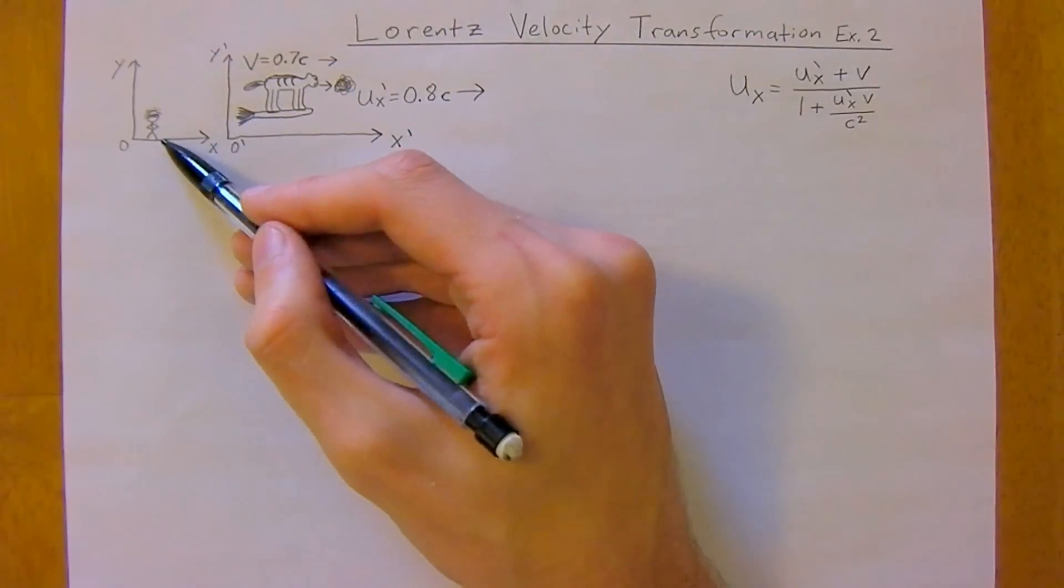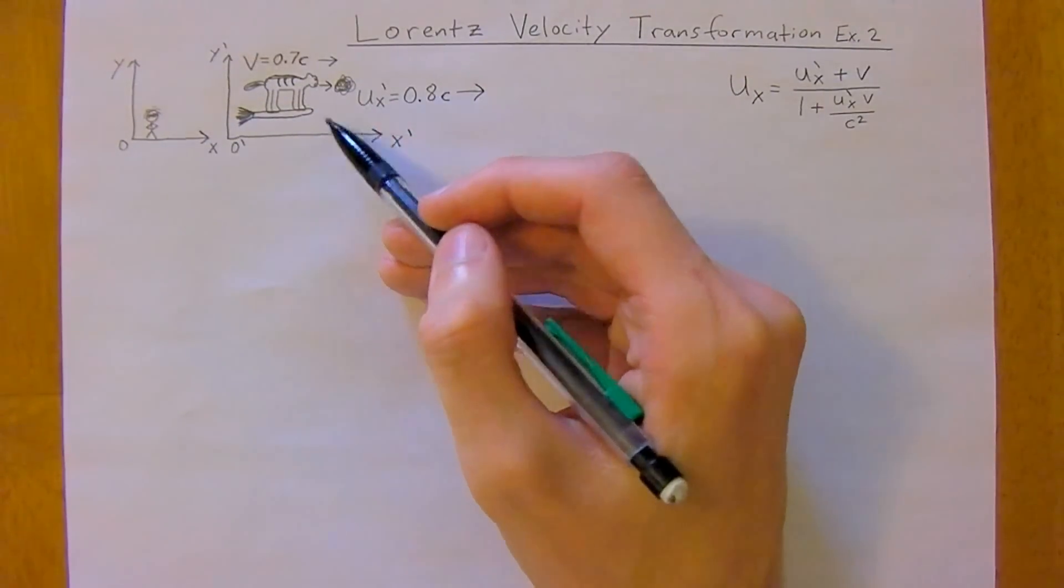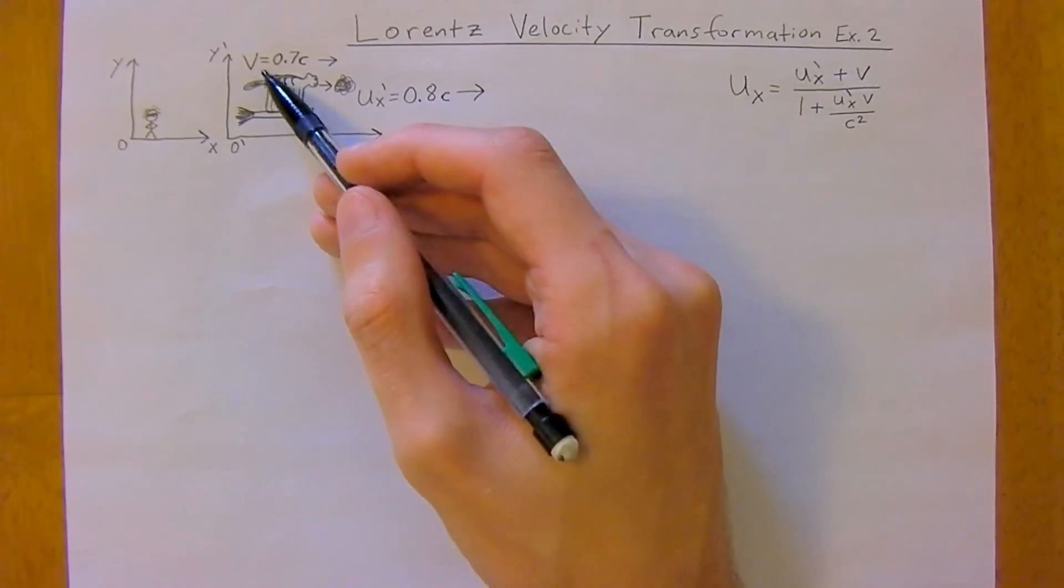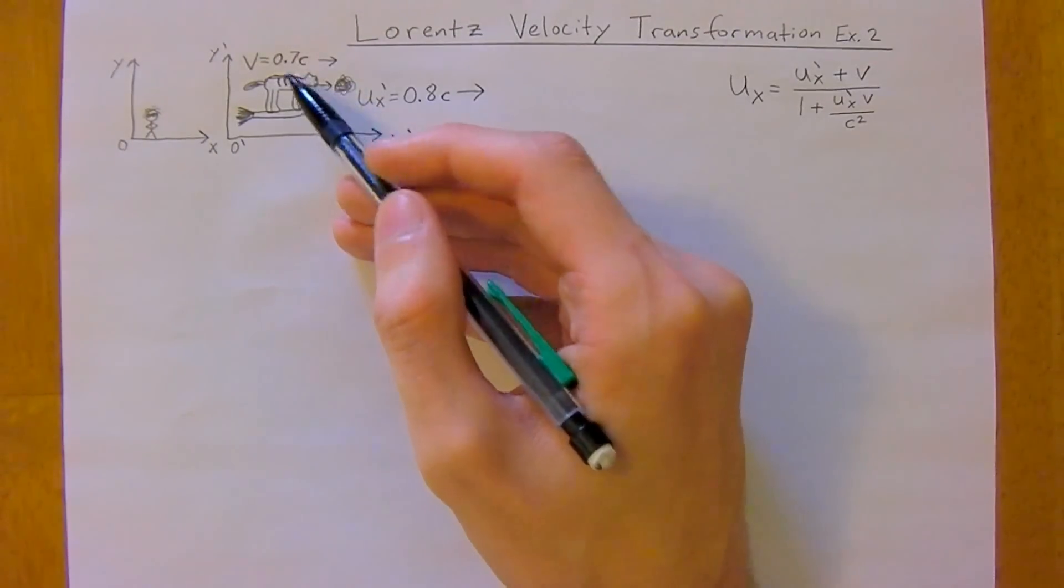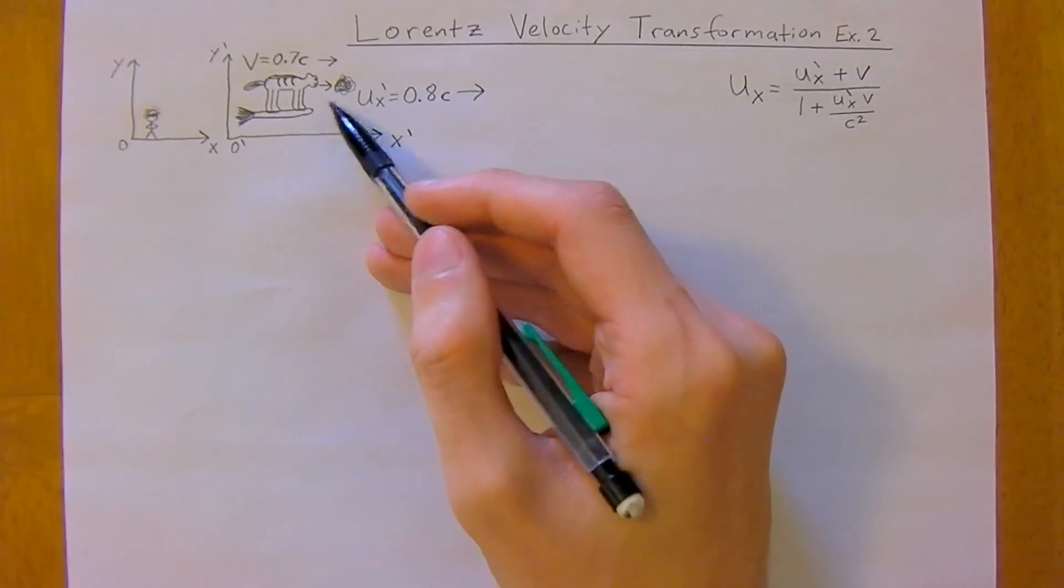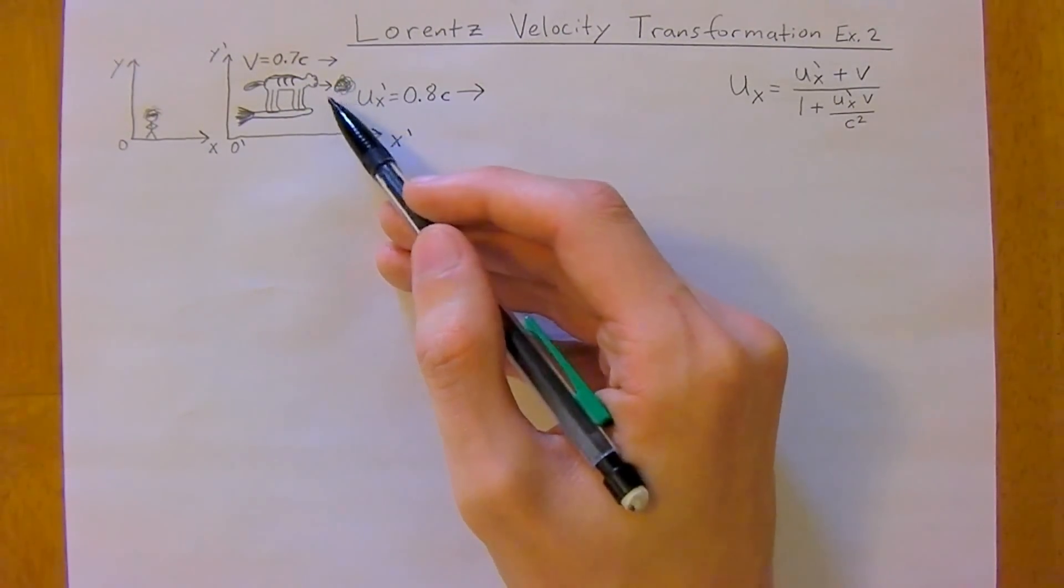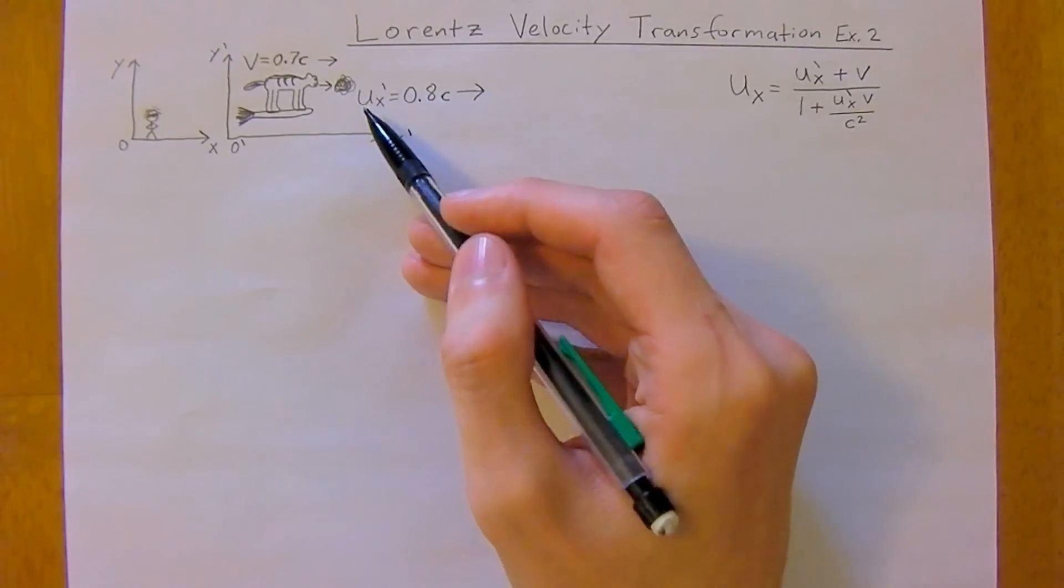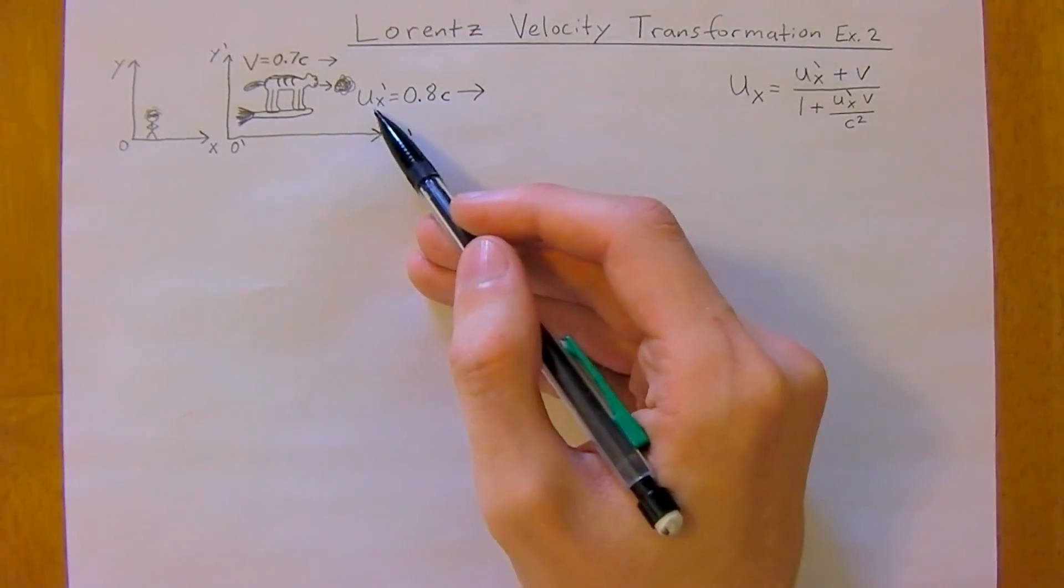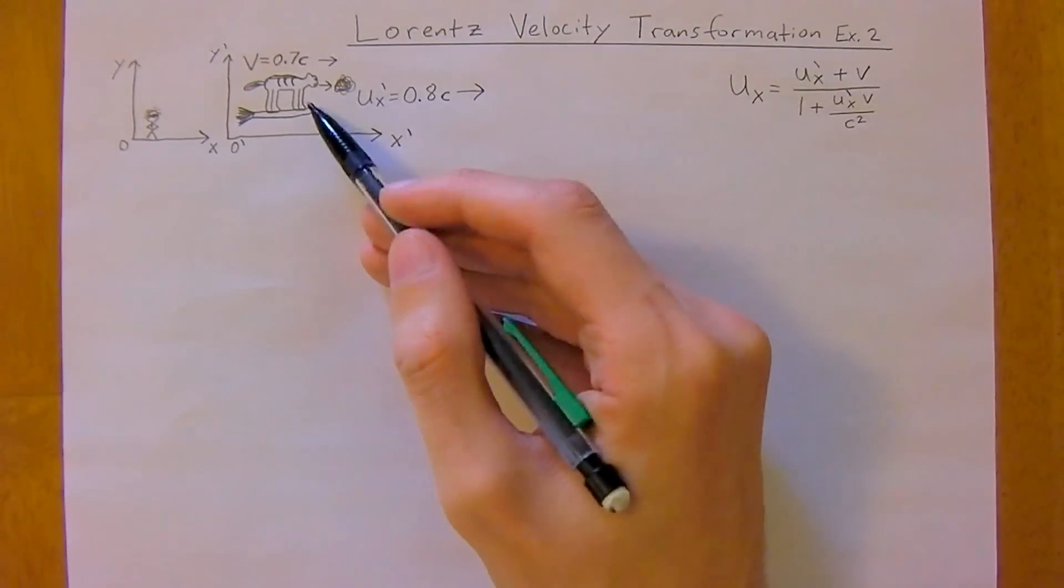So relative to you, stationary on Earth, you observe that this cat flying on a broomstick is traveling at 70% the speed of light or 0.7 times c. And you see that the cat coughs up a hairball and it's perhaps an exuberant cough and the hairball is traveling at 80% the speed of light relative to the cat.